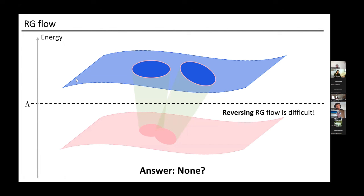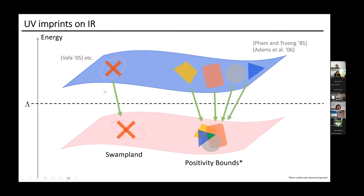The question then is essentially what constraints we can put on this EFT — what I call L_IR. If you go back to the 80s, people would have told you that there's essentially nothing you can put on that, because RG flow washes all the information out and there should be no information left over at the IR. So really it's the entire landscape of possible effective field theories that should be consistent with UV theories.